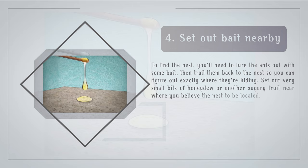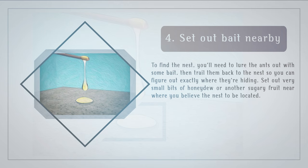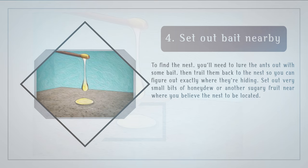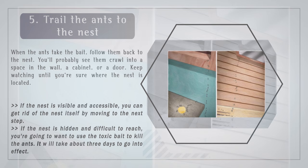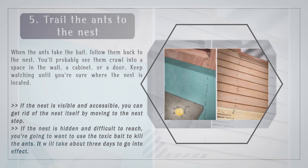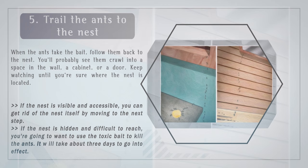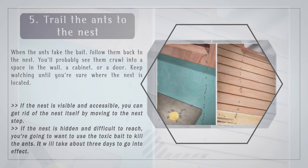Step 4: Set out bait nearby. To find the nest, you'll need to lure the ants out with some bait, then trail them back to the nest to figure out exactly where they're hiding. Set out very small bits of honeydew or another sugary fruit near where you believe the nest to be. Step 5: Trail the ants to the nest. When the ants take the bait, follow them back. You'll probably see them crawl into a space in the wall, a cabinet, or a door. If the nest is visible and accessible, you can move to the next step. If it's hidden and difficult to reach, use toxic bait to kill the ants — it will take about 3 days to go into effect.